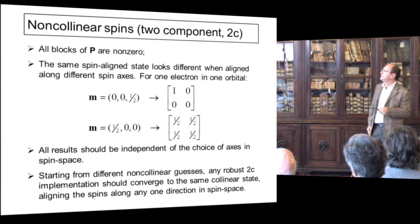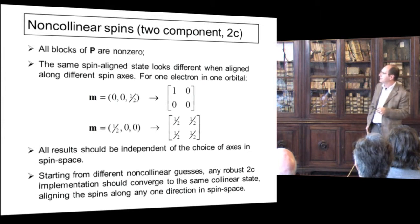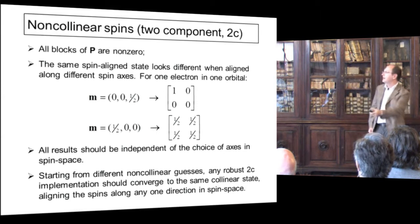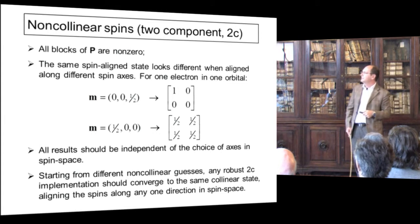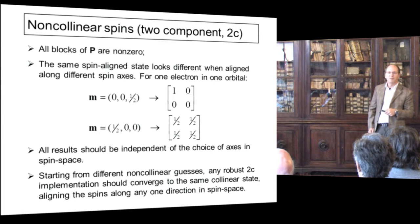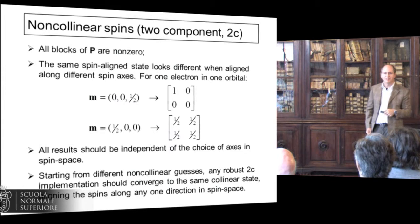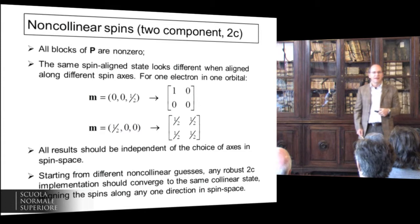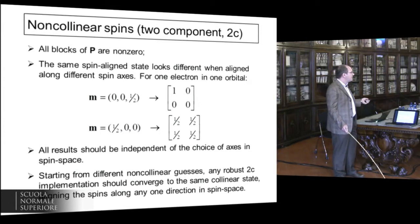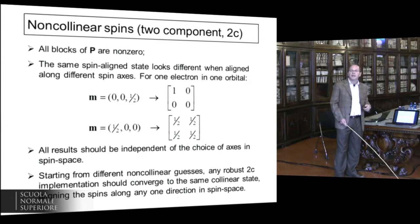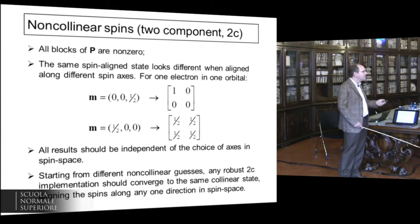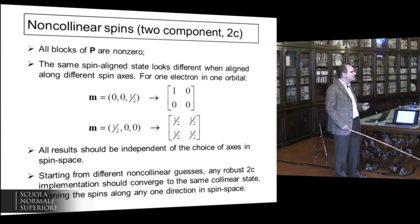A very simple state like a doublet looks very different depending on alignment: this is the density matrix for alignment on the z-axis — only P_αα is non-zero — and this is if the same state is aligned on the x-axis — all elements are non-zero. Does the energy change? No, not if your Hamiltonian doesn't include spin-orbit and doesn't include an external magnetic field. So these two quantities should give you the same energy. You should be able to do the calculation along either arbitrary spin quantization axis and get the same result.